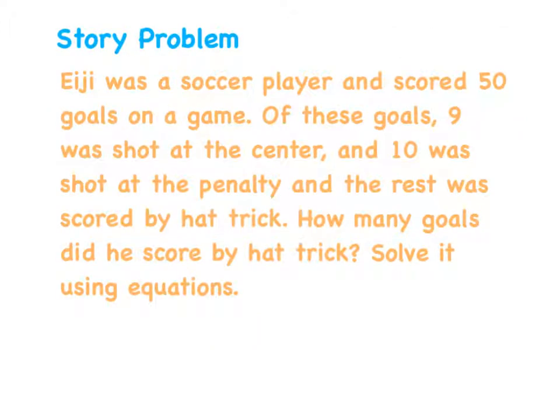This is the story problem. Eiji was a soccer player and scored 50 goals in a game. Of these goals, 9 was shot at the center and 10 was shot at the penalty, and the rest was scored by hat trick. How many goals did he score by hat trick? Solve it using equations.